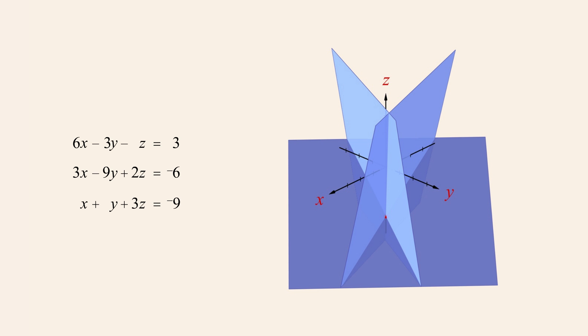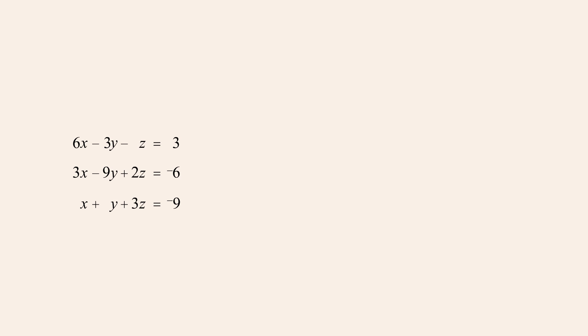We saw in the previous lecture that systems like this can be solved using the same basic techniques we use to solve systems of two equations in two variables. We start by choosing two of the three equations and eliminate a variable, giving us an equation in two variables. In this system, let's eliminate the variable z using the first two equations.